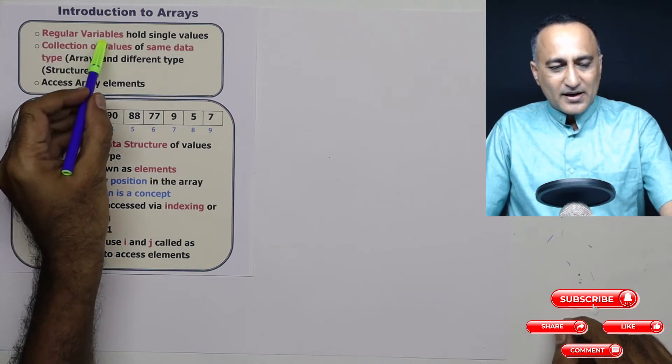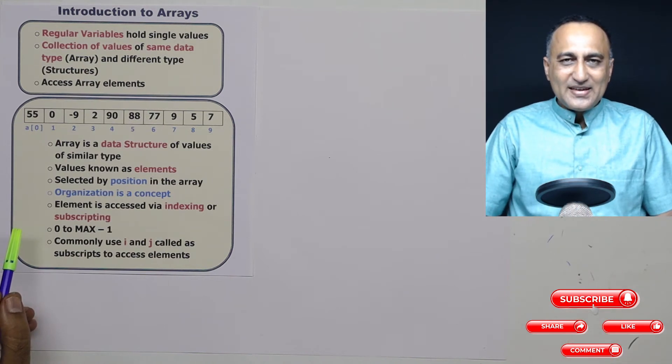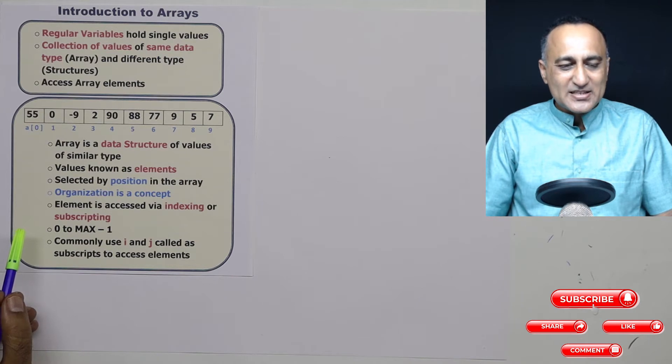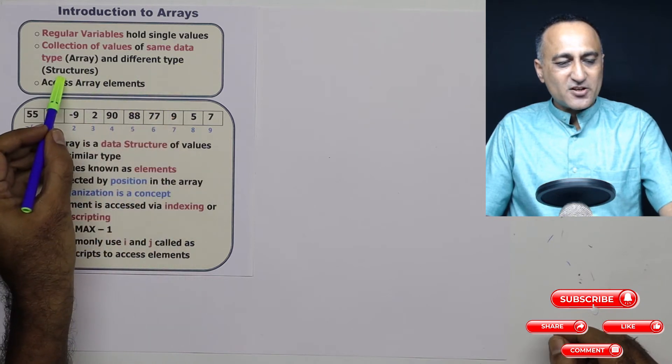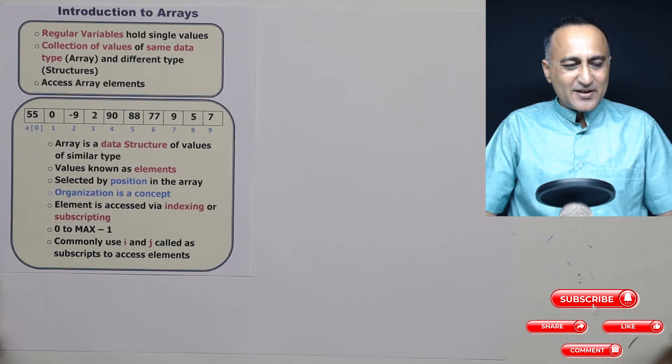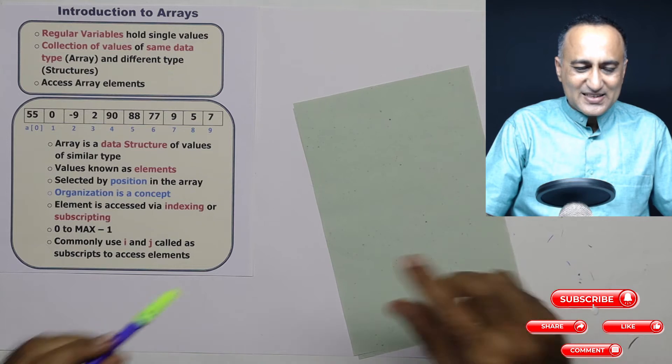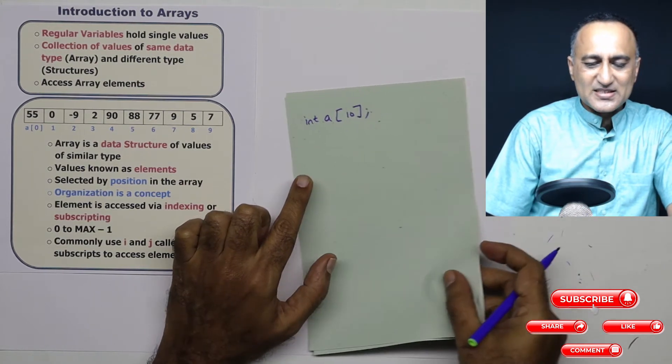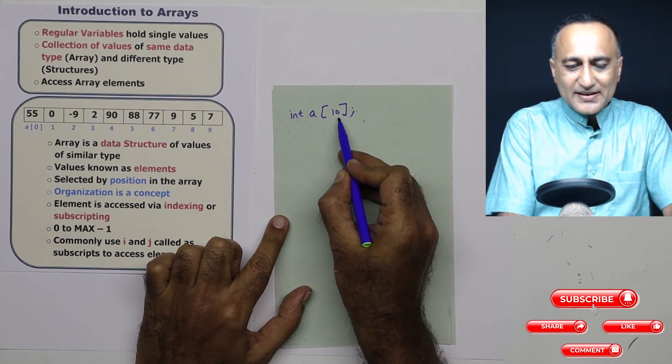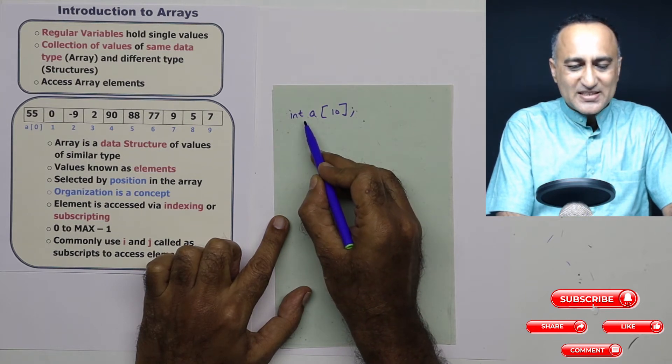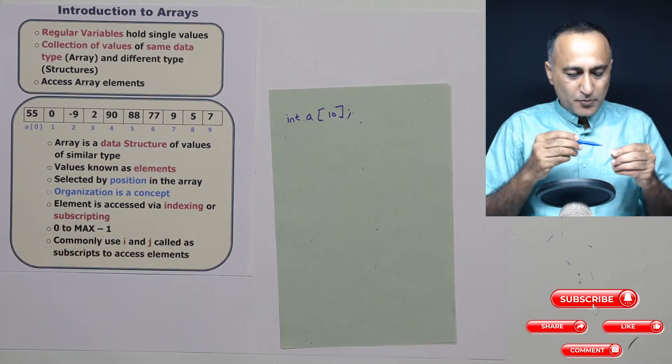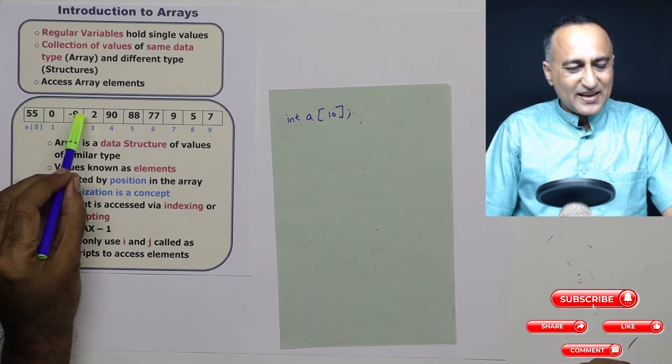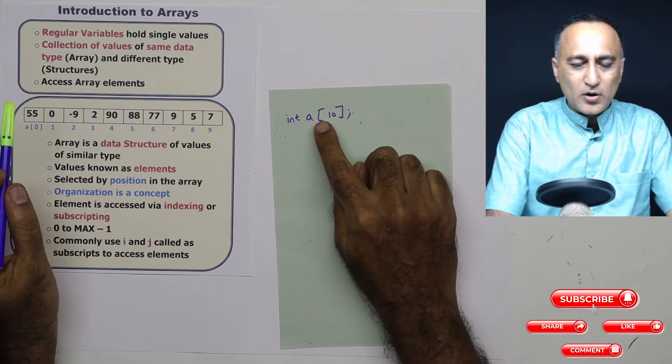Regular variables hold a single value. Array is nothing but a collection of related values of the same data type which can be referred to by a single name and a subscript. If we have a collection of different data types, that is the structures which we shall be dealing with in our future lectures. Let us say I declare something like this: int a of 10. What I have actually done here is I have declared an array a which can hold 10 numbers all of the type integer data type. So let's see how this particular declaration looks in the main memory of the computer.